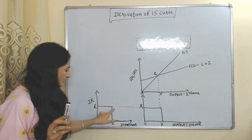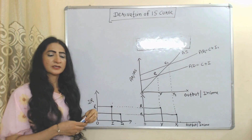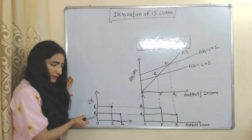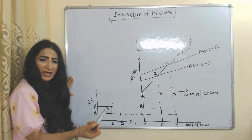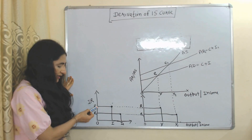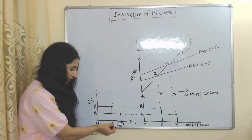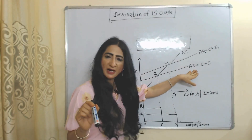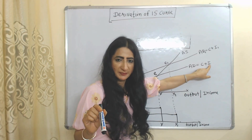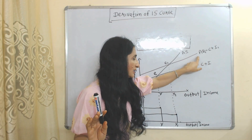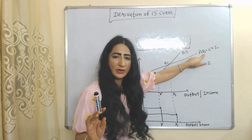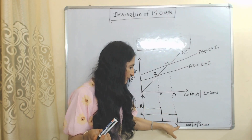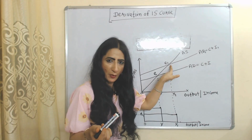Initial output is OY and initial interest rate is OR. Now suppose interest rate reduces from R to R1. Since interest rate and investment have an inverse relationship, as interest rate falls, investment increases from I to I1. As investment increases, aggregate demand also increases because AD equals C plus I. So the aggregate demand curve shifts forward from AD to AD1. As aggregate demand increases, output also increases from Y to Y1, giving us a new equilibrium point E1.